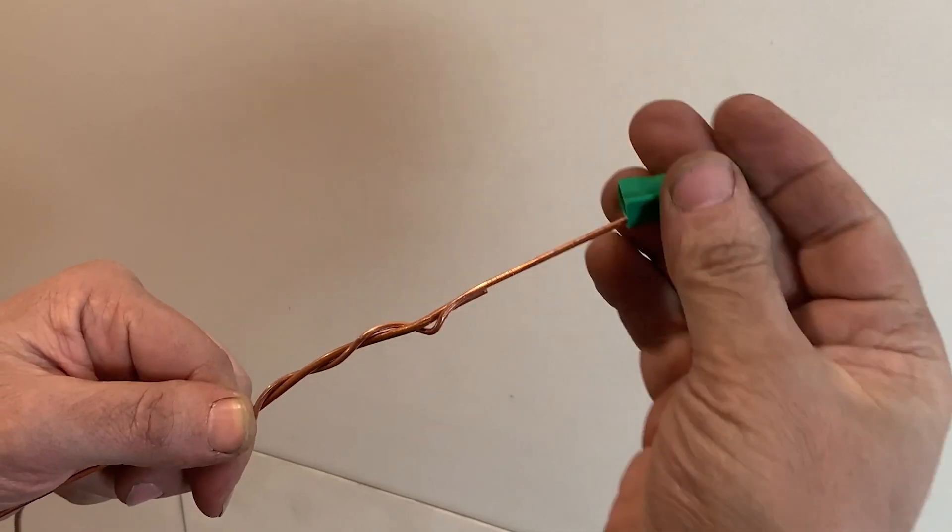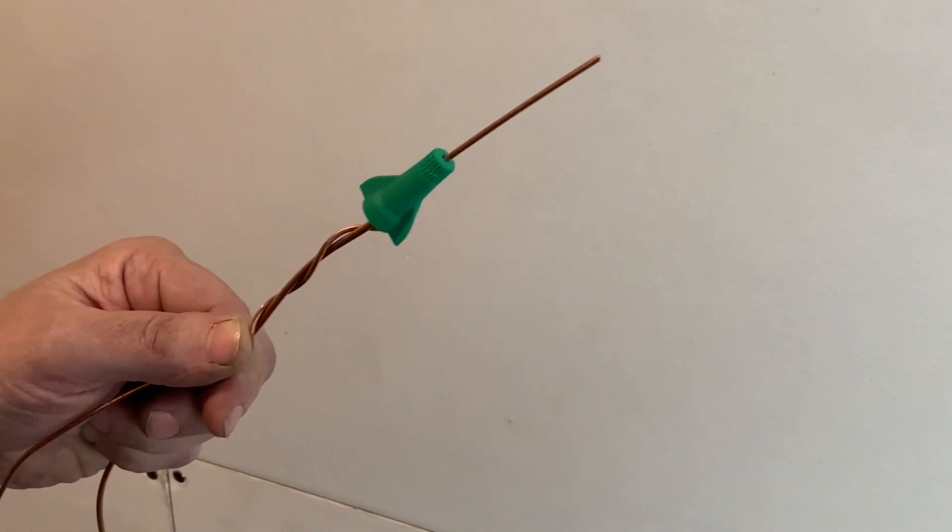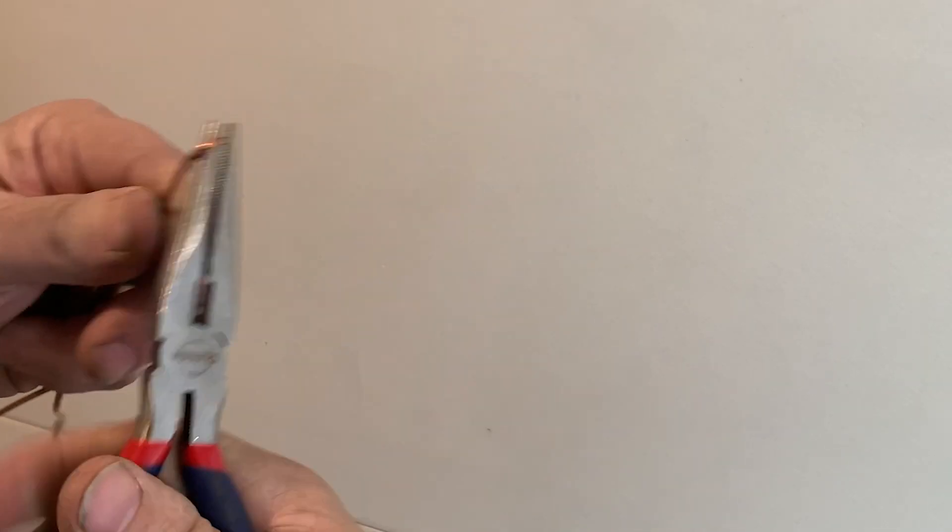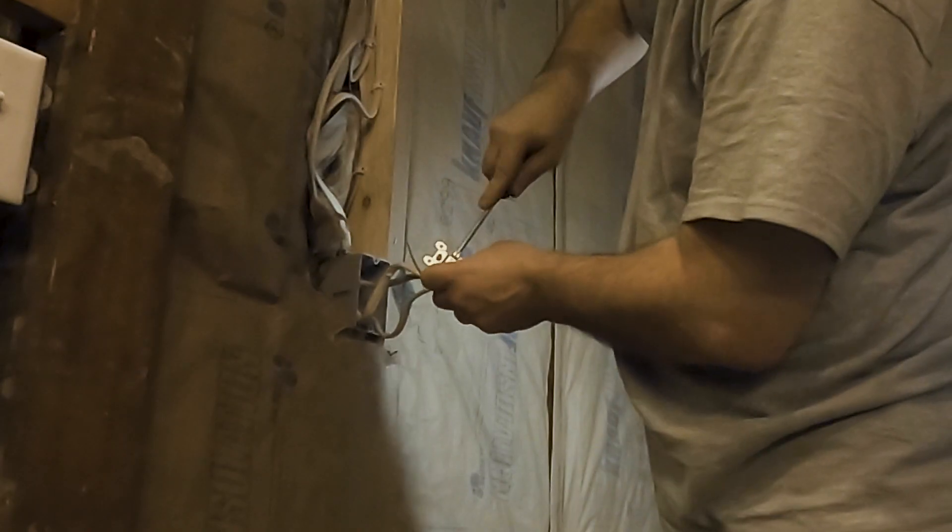I like using these green wire nuts specifically designed for ground wire connections. They allow you to connect all the ground wires together and have one longer wire strand extend through the tip of the wire nut to make the ground connection with.